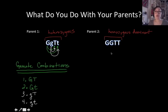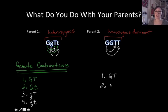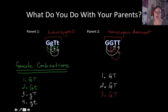Now I need to do the same thing for parent number two, so I'm going to FOIL again. Multiplying the first letter by the first letter of the next trait: big G, big T. Doing it again for the next combination: big G, big T. And again: big G, big T. And one more time: big G, big T. What's unique about this genotype is that all four gamete combinations are exactly the same, because they're homozygous dominant.